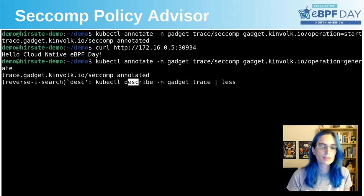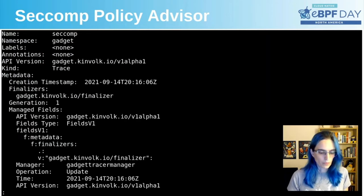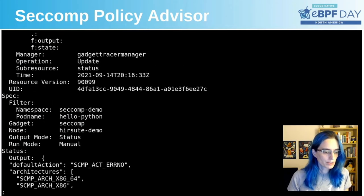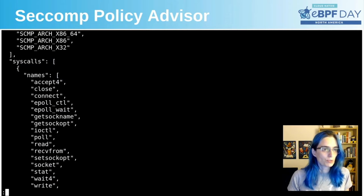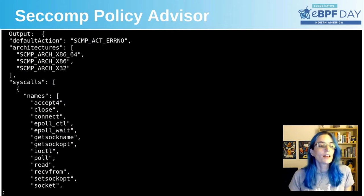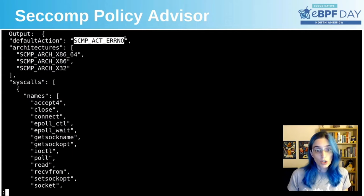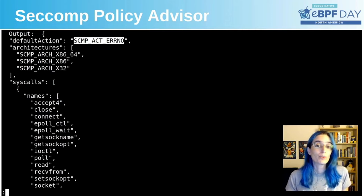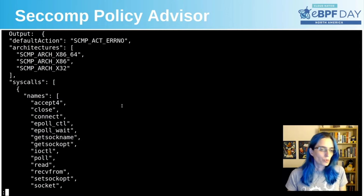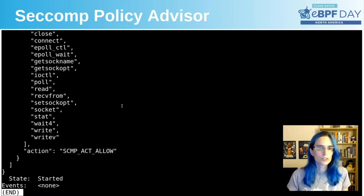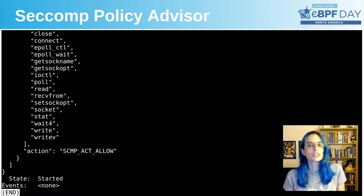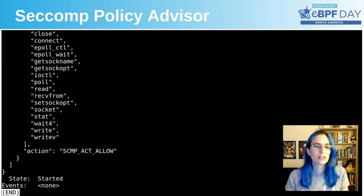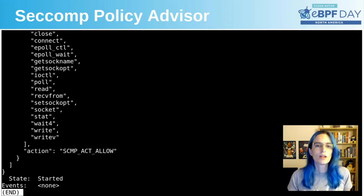So if we go here to the status, we see that the policy is there. The default action is ERRNO, which means that if a syscall is executed that's not in the list of allowed options, it will fail with an error. And we can see that the list here is not too long, because we just had a single request handled by these calls.